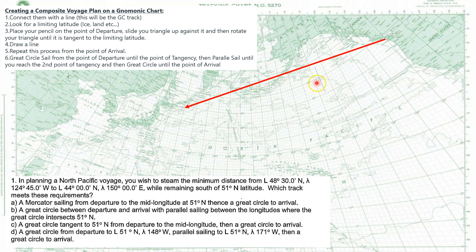So maybe what we would do is say we don't want to go farther north than 51°N. You're going to find that limiting latitude and mark it. Often the question will tell you what that is — they keep mentioning 51°N — while remaining south of 51°N. That's right in the body of the question. So what is going to be the minimum distance while remaining south of that line?